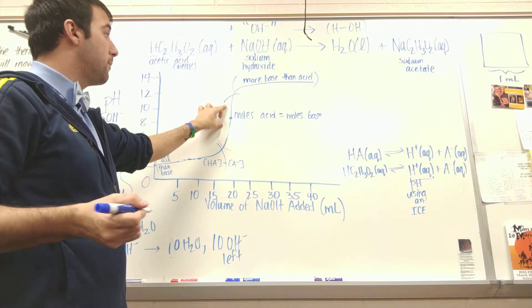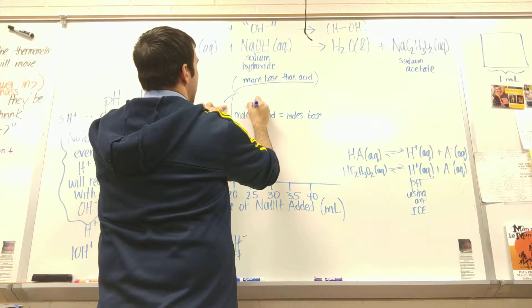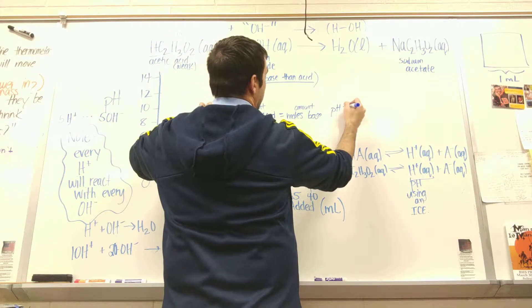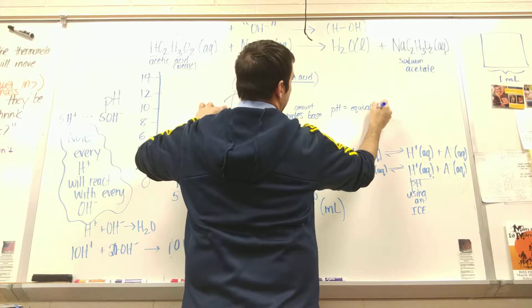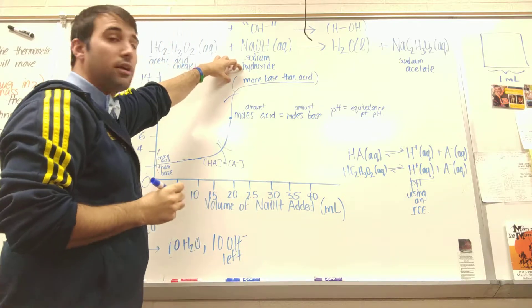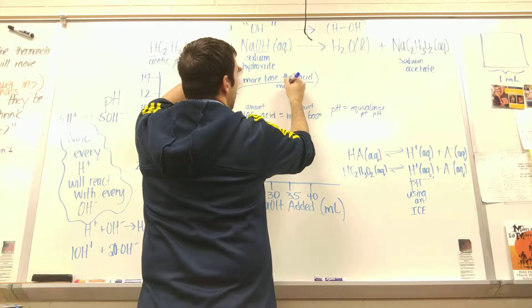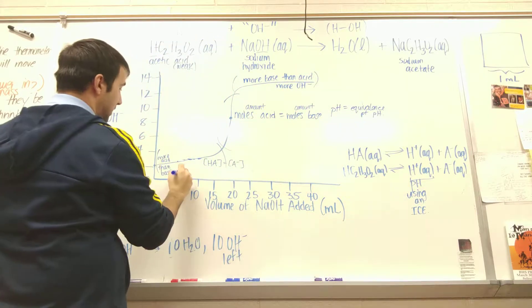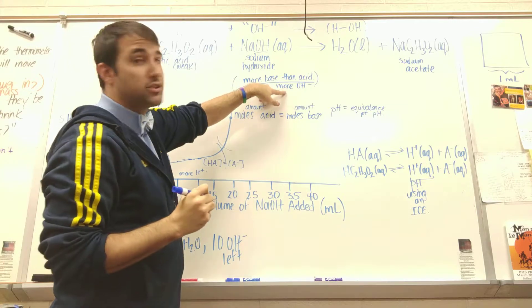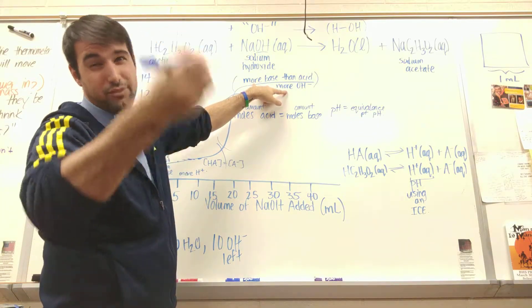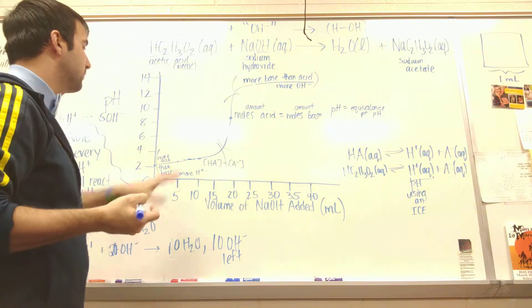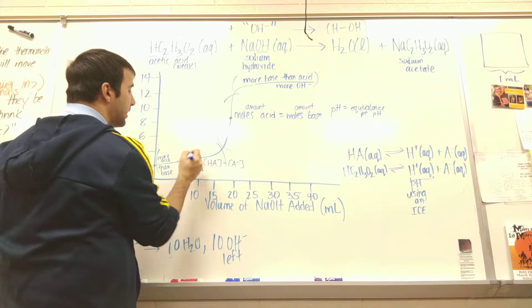My moles of my acid or my amount of acid is equal to my amount of base. So my pH is going to probably be equal to my equivalence point pH. And then up here, I have more base than acid. So I have more OH-. Down here, I have more H+. And so up here, my pH is going to be dependent on my amount of OH- that's left over or in excess. Down here, it's going to be how much H+ I have left over.